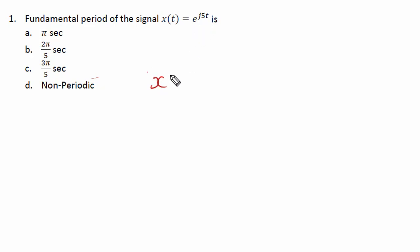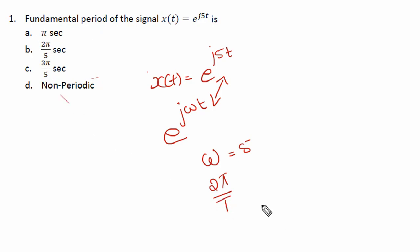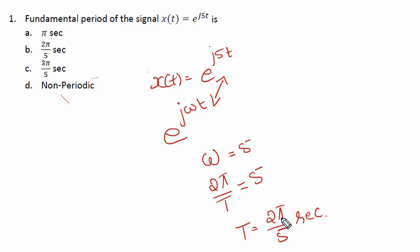We have x(t) = e^(j5t). This is of the form e^(jωt). Comparing, the value of ω is 5. As discussed in the previous video, ω = 2π/T, where T is the fundamental period. So 2π/T = 5, which gives T = 2π/5 seconds. The correct answer is option B: T = 2π/5 seconds.